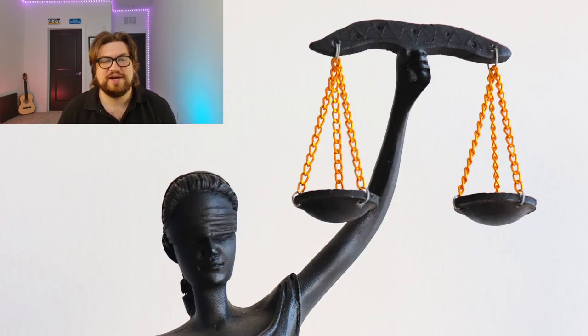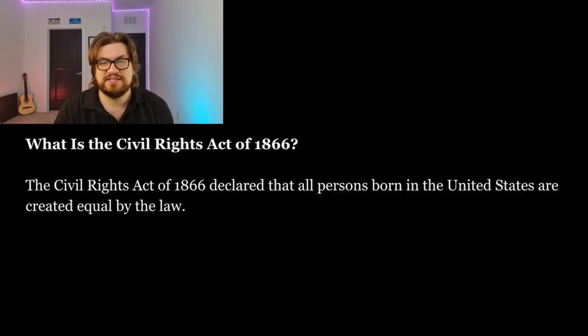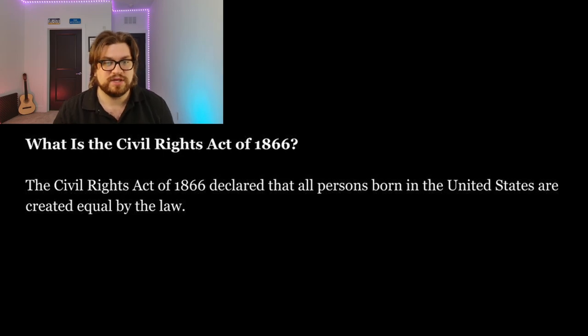To understand fair housing, we have to understand where it all began, and that is with the Civil Rights Act of 1866. The Civil Rights Act of 1866 declared that all persons born in the United States are created equal by the law. This civil rights bill protected the rights of freed slaves, ensuring that they had full and equal benefits of the same laws as white people. African Americans could no longer face discrimination because of their race, color, or previous slavery or involuntary servitude.